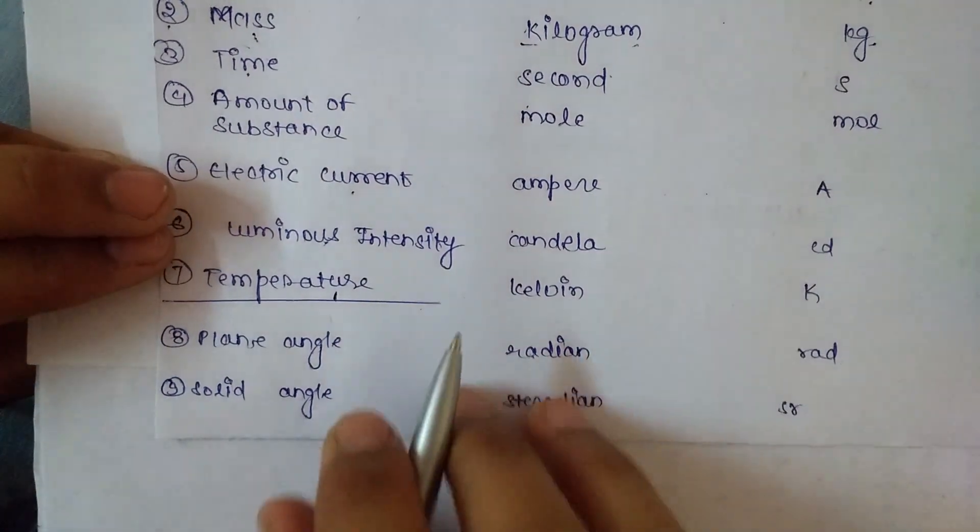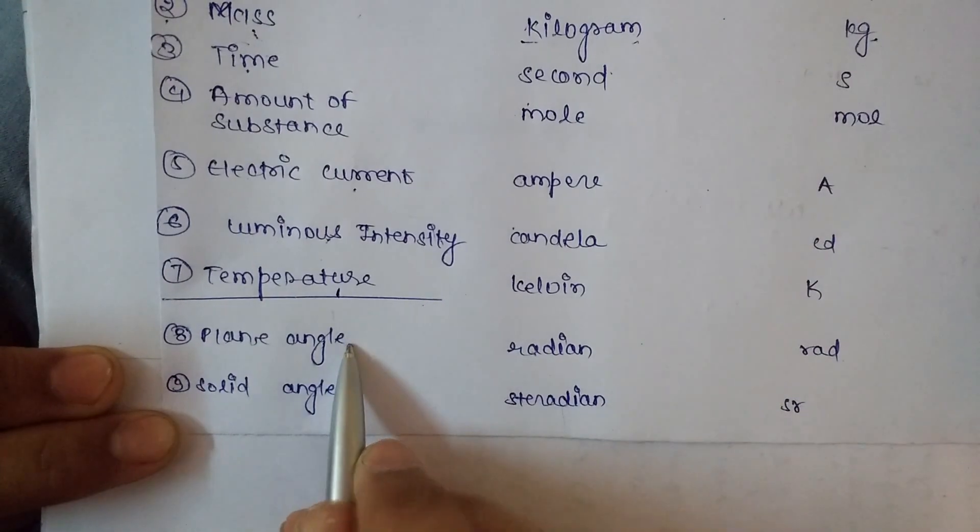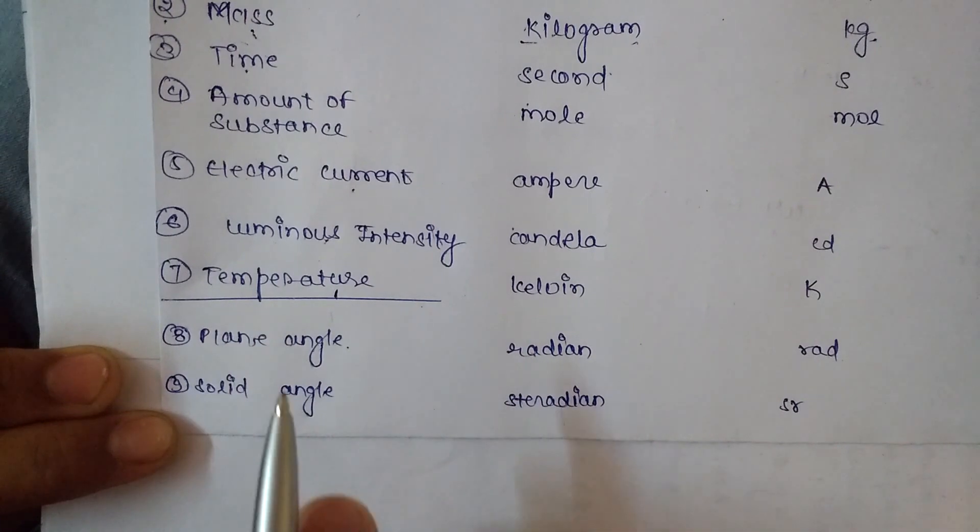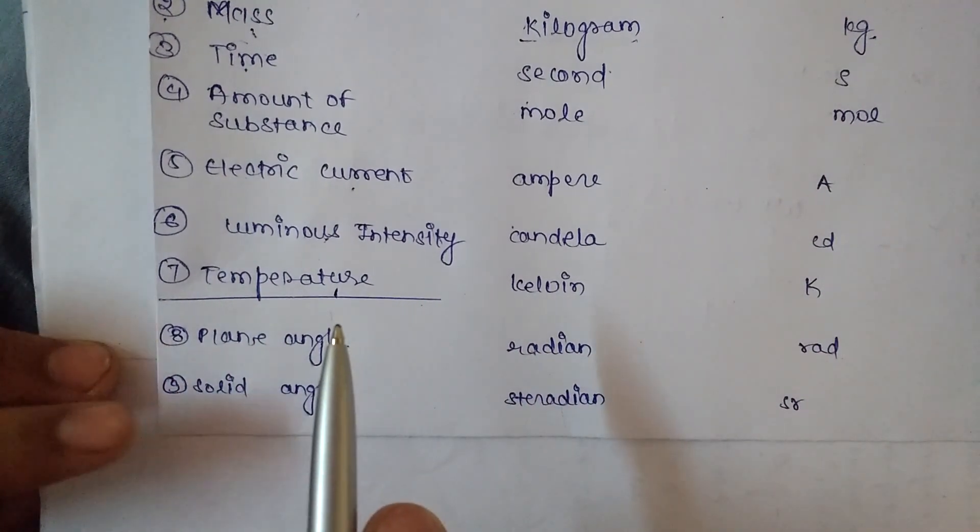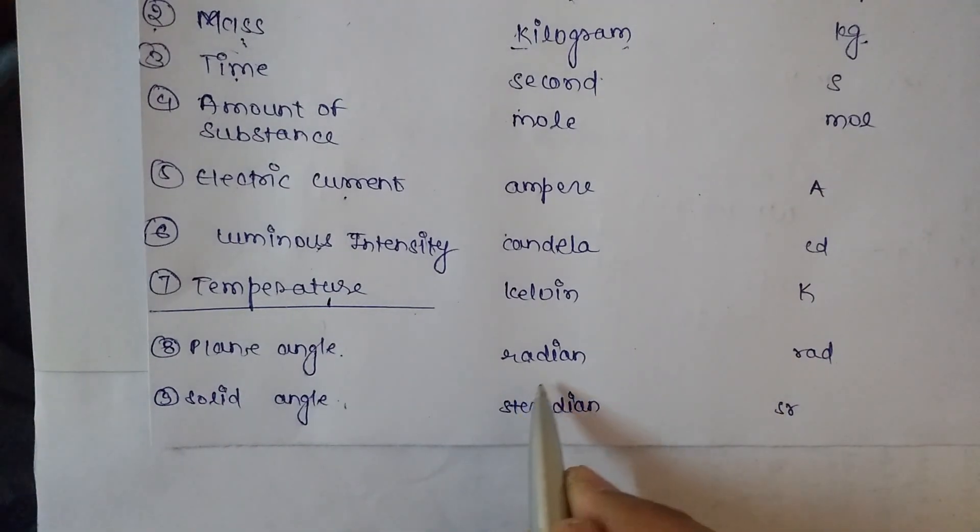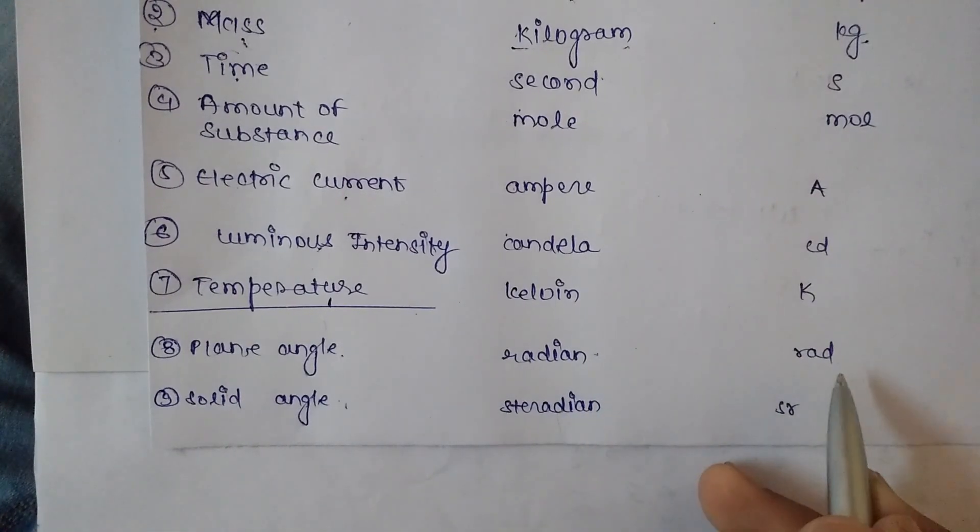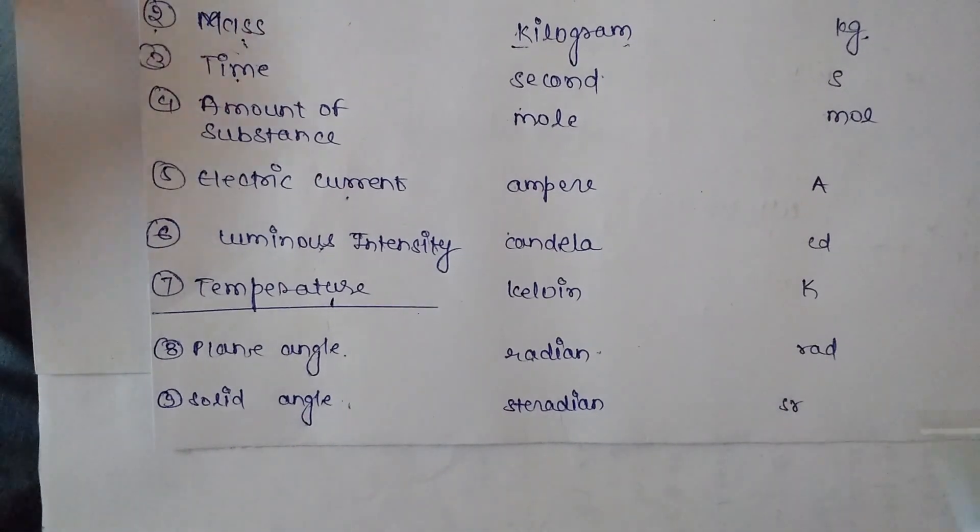Two supplementary units are also fundamental units. First is plane angle and second is solid angle. For discussion on these two topics, we will see some other tutorials in the future. Fundamental units of plane angle and solid angle are radian and steradian respectively, with symbols rad and sr.